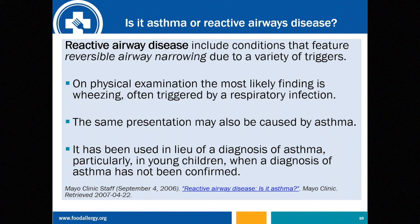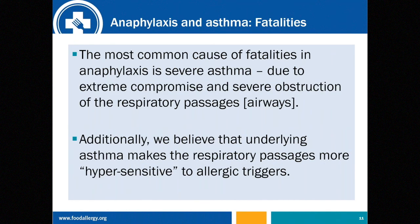In severe asthma, the most common cause of fatalities is airway compromise — obstruction of respiratory passages, restriction of airflow — and underlying asthma makes respiratory passages more hypersensitive to a variety of indoor and outdoor triggers. Now, let's contrast anaphylaxis and asthma, since their symptoms overlap frequently.